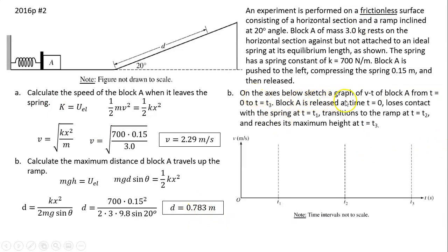Part B: On the axis below, sketch a graph of velocity versus time of block A from t = 0 to t = t₃. Block A is released at time t = 0, loses contact with the spring at t = t₁, transitions to the ramp at t = t₂, and reaches its maximum height at t = t₃. From zero to t₁, the block is in contact with the spring. Due to the force of the spring, block is accelerating. However, that acceleration is decreasing because as the spring tries to return to its unstretched length, the force decreases. So in the v-t graph, slope is acceleration and slope is decreasing. At t₁, the block loses contact with the spring and has reached its maximum velocity.